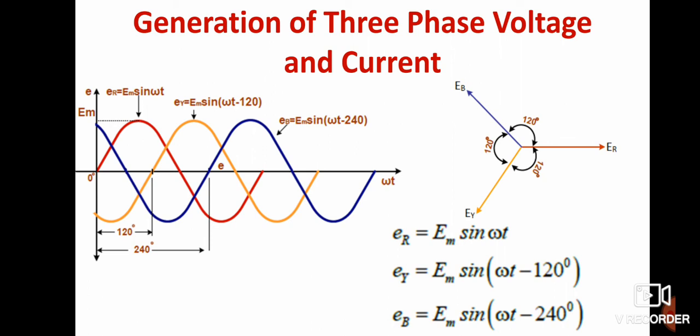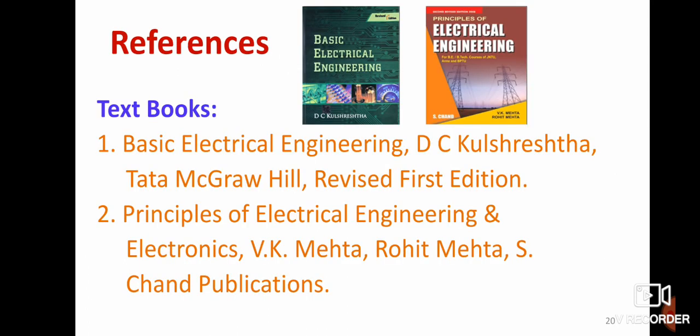This is regarding the generation of three-phase voltage and current. ER, EY, EB is known as phase sequence, which I will explain in the coming session. In this video, I discussed how to produce three-phase voltage and current using Faraday's laws of electromagnetic induction, the alignment of three conductors, the phase shift and displacement, how to produce EMF, and the EMF equations corresponding to each coil.